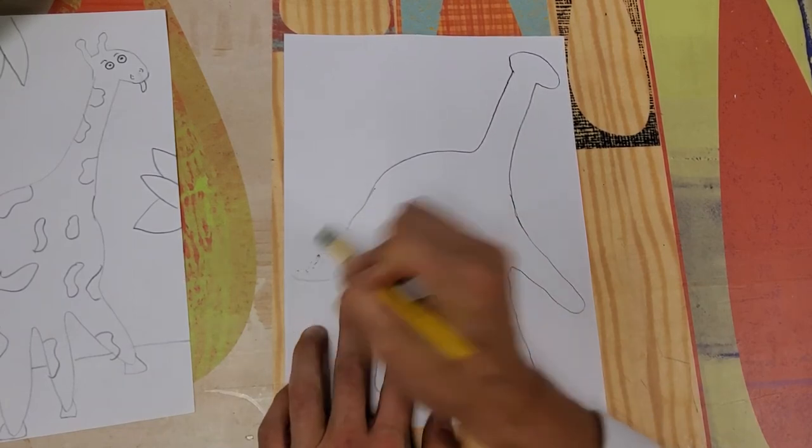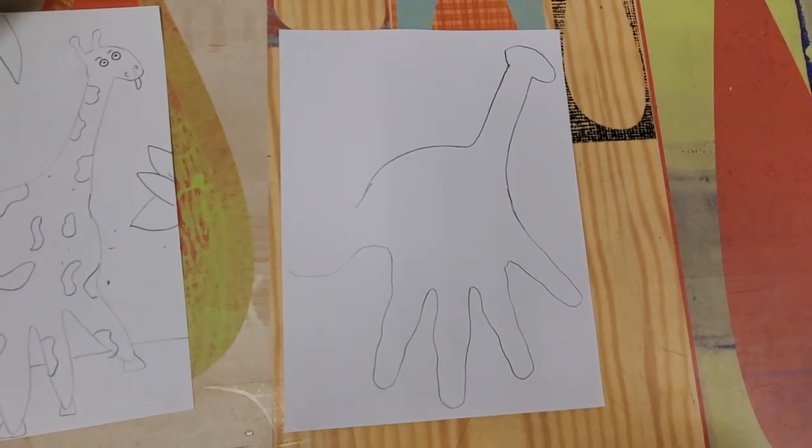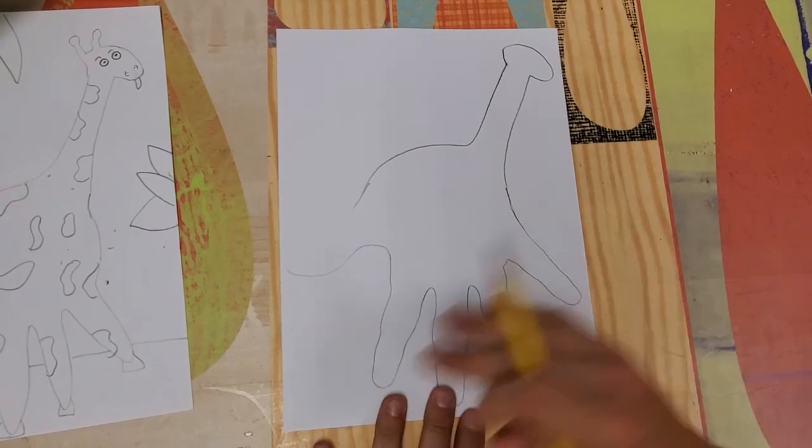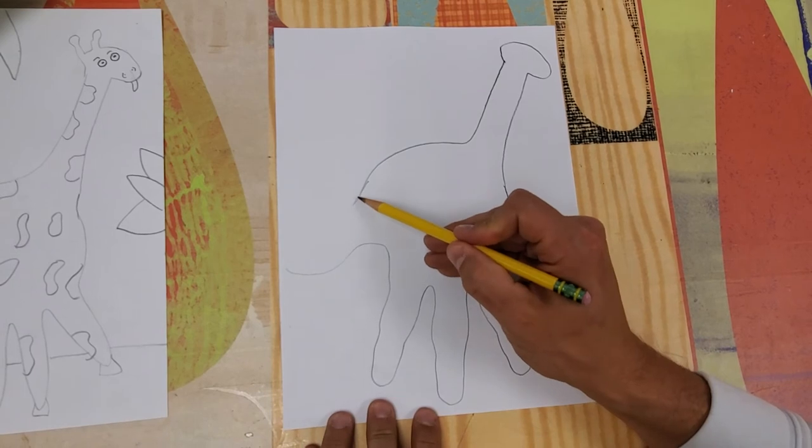So I'm going to erase one side of my thumb. Do you see how I erased the top of my thumb? The reason we're doing that is our thumb shape might be a little too big for that tiny giraffe tail.